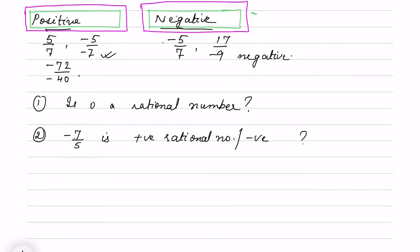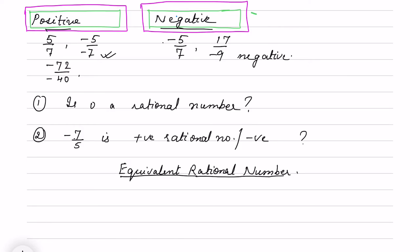Now we start with equivalent rational numbers. How can we convert to equivalent rational numbers? We have done equivalent fractions also — we just multiply with the same number in the numerator and denominator, or we can divide by the same number, and then we get equivalent fractions. Same way in rational numbers, since every fraction is a rational number, suppose I have to find equivalent rational numbers of 3 by 4.